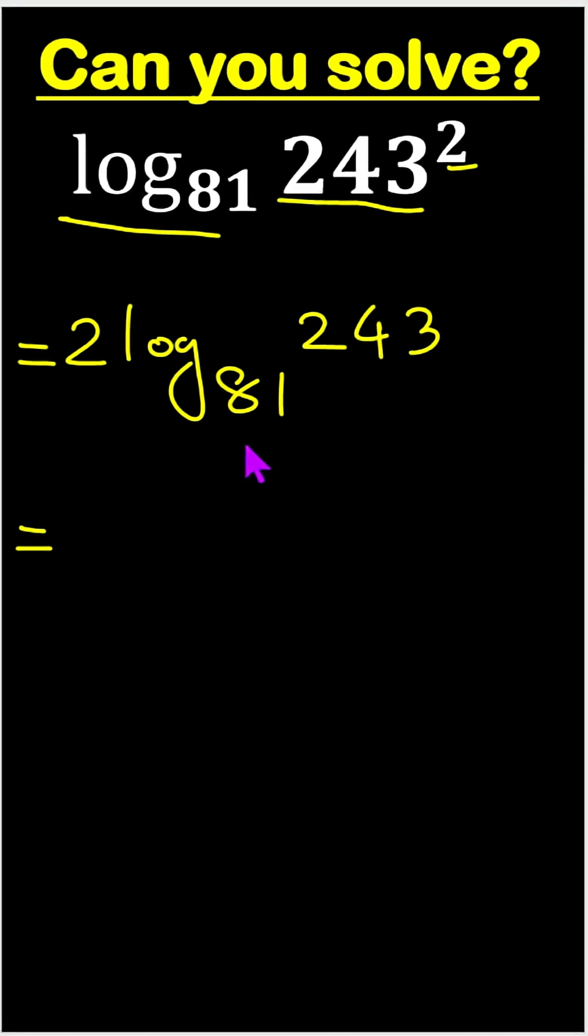So now what can I do? 2 log base 81 - we can write this as 3 to the power 4. And 243, we can write as 3 to the power 5.